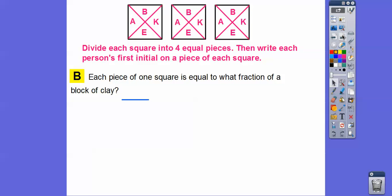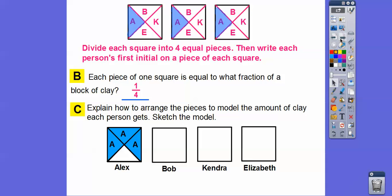So each piece of one square is equal to what fraction of the block of clay? Alex is getting one of these four pieces, so that would be one-fourth. Now we're going to explain how to arrange the pieces to model the amount of clay each person gets and sketch the model. They gave us a hint — they started doing one for Alex. Since there are four students getting clay, here are their four blocks, but they're not getting the whole block because Alex is getting this piece, this piece, and this piece.